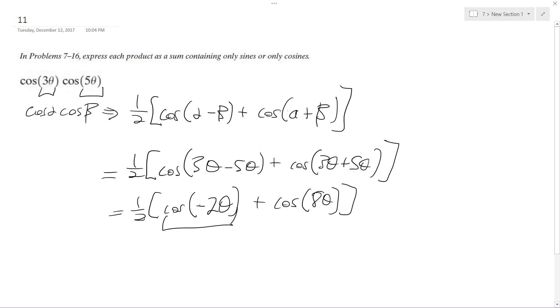Now, cosine is an even function, which means that if you have something negative in here, it's equivalent to just getting rid of the negative. So what we end up with is one-half...